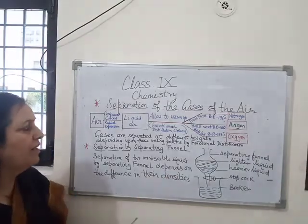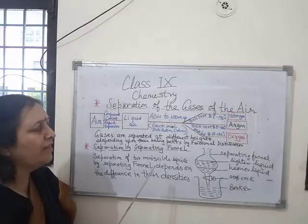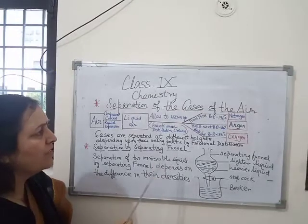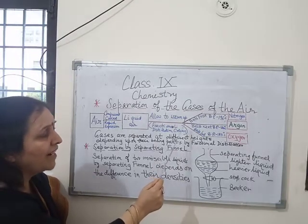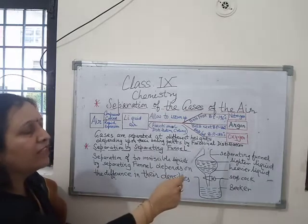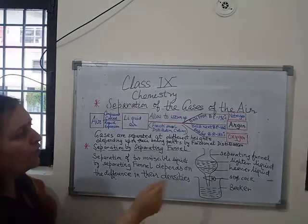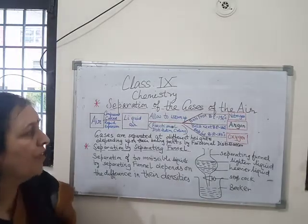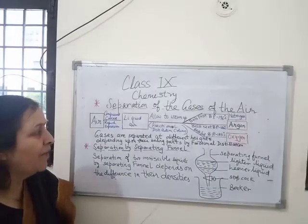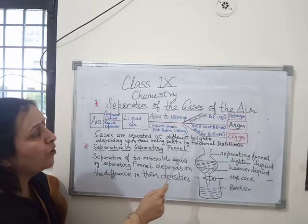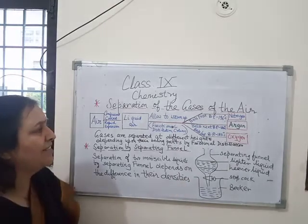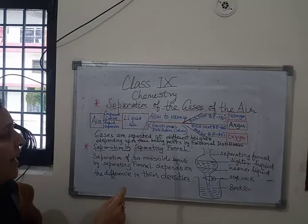Then liquid argon, having a boiling point of minus 183 degrees Celsius, boils next. It collects at the middle of the fractional distillation column and converts into argon gas. Liquid oxygen, having a boiling point of minus 183 degrees Celsius, boils last and collects at the bottom of the fractional distillation column, converting into oxygen gas.